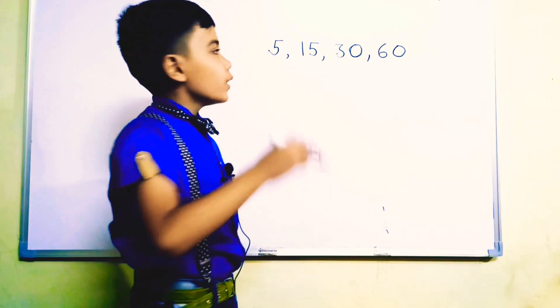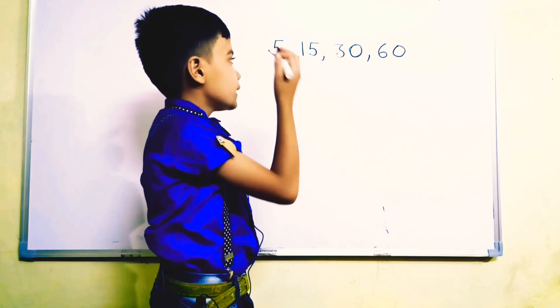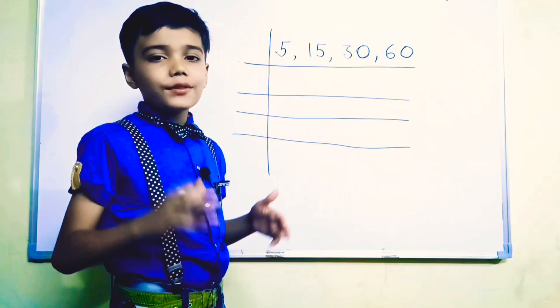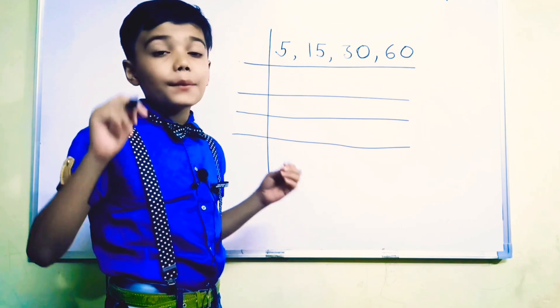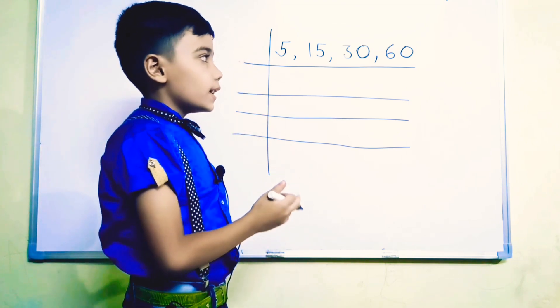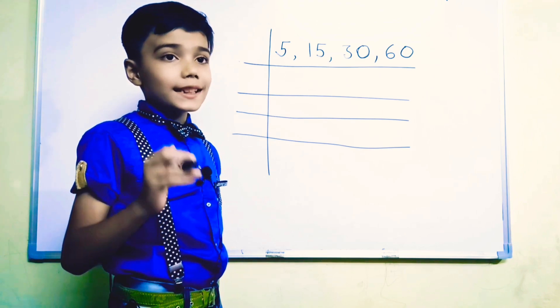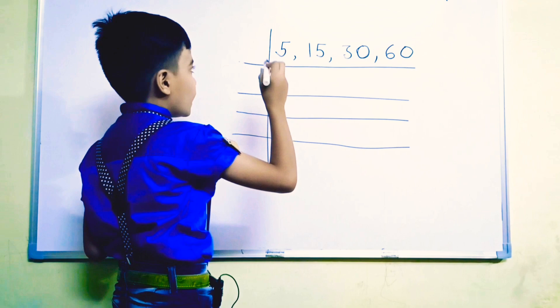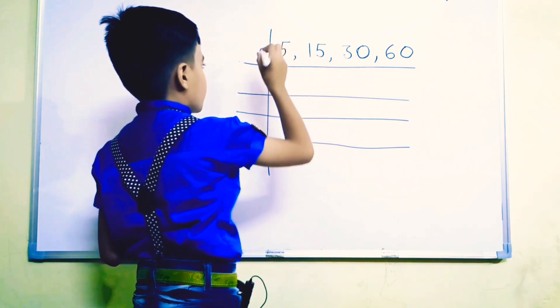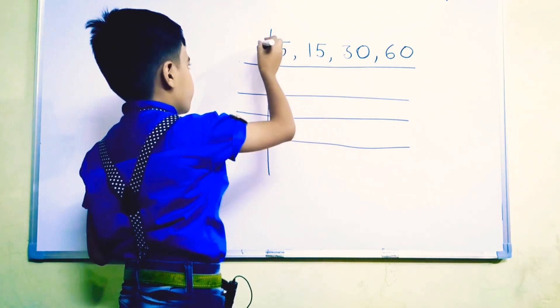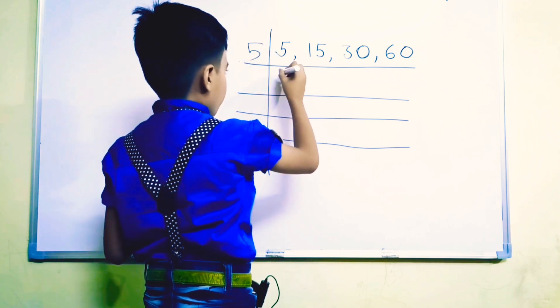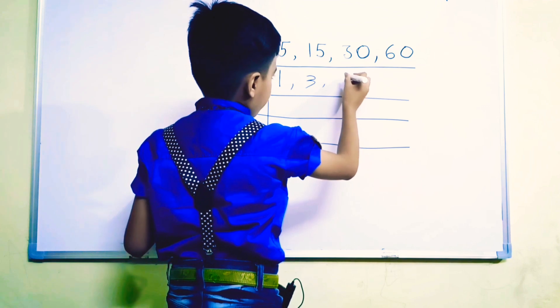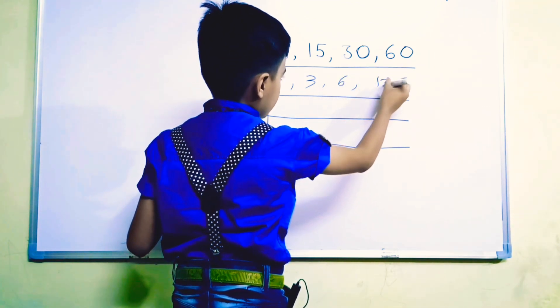Suppose we have 5, 15, 30 and 60. We have to find its LCM. We have to find its prime factorization. Make a table and think a number which is divisible by all of these numbers. Now, 5 is divisible by all of these numbers, so we will write here 5. 5 ones are 5, 5 threes are 15, 5 sixes are 30 and 5 twelves are 60.